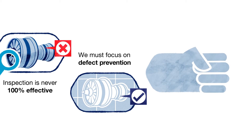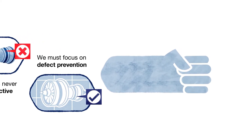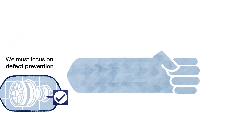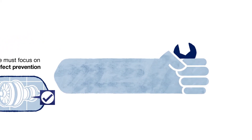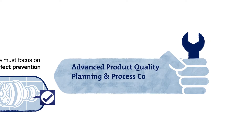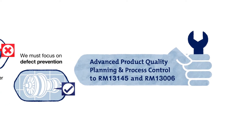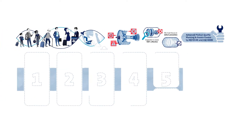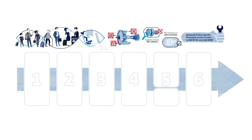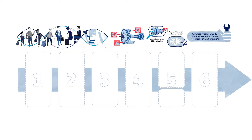The answer is to avoid producing defects in the first place. To this end, defect prevention activities are built into our advanced product quality planning and process control requirements as an end-to-end process, with each step being integral to defect-free production.